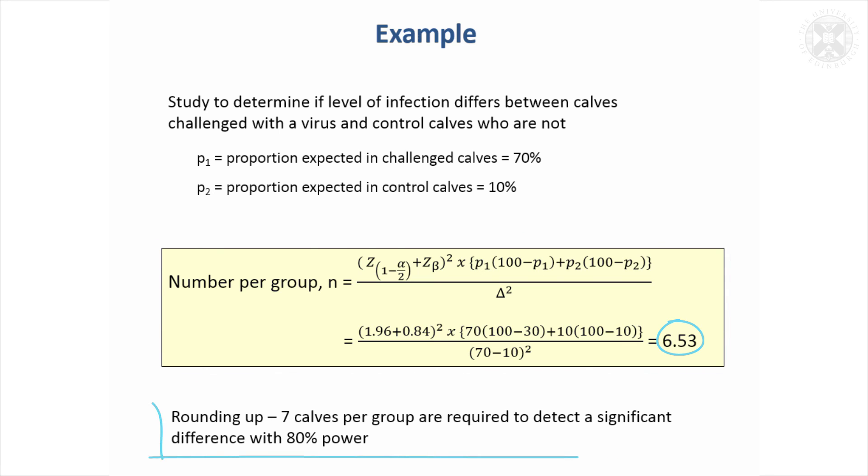So rounding up, seven calves per group are required to detect a statistically significant difference with 80% power, because the Z_β we've put in is 0.84, and that's the value that relates to 80% power.